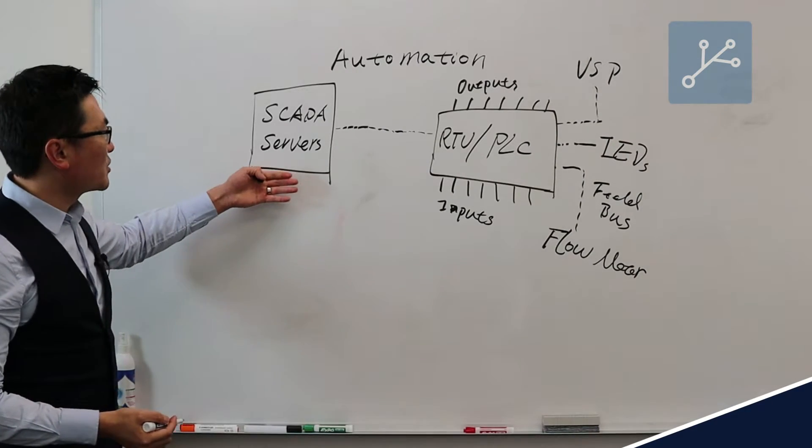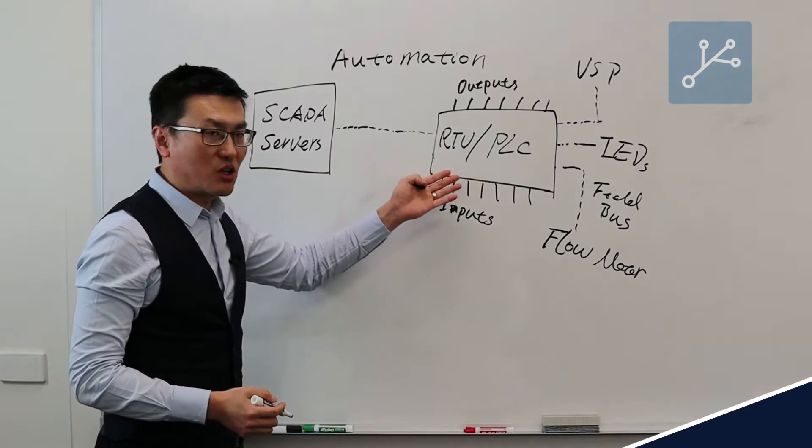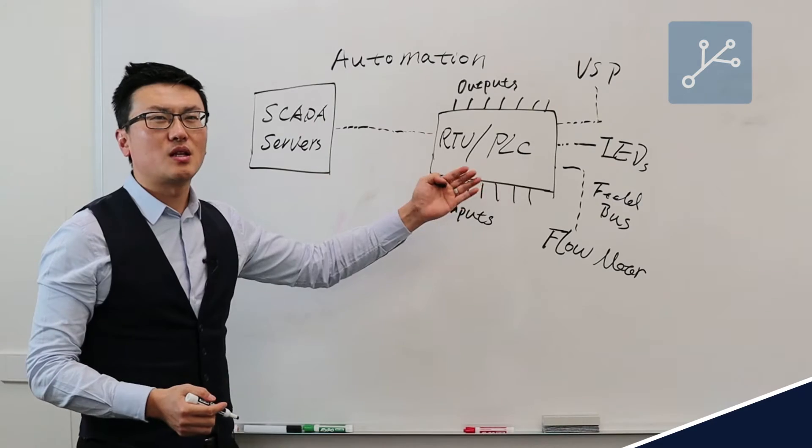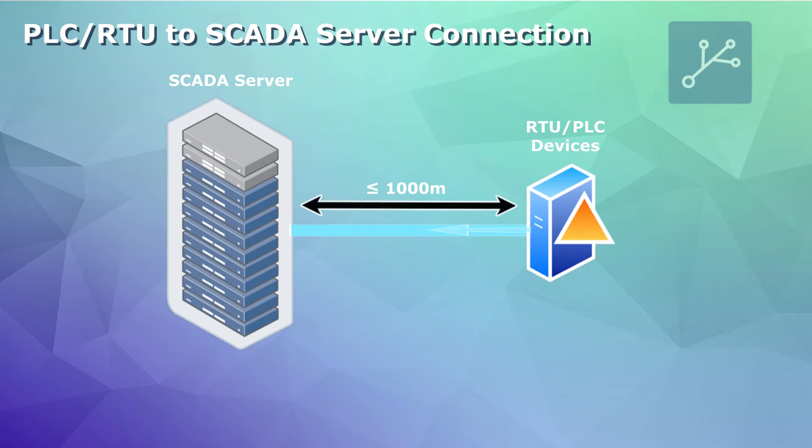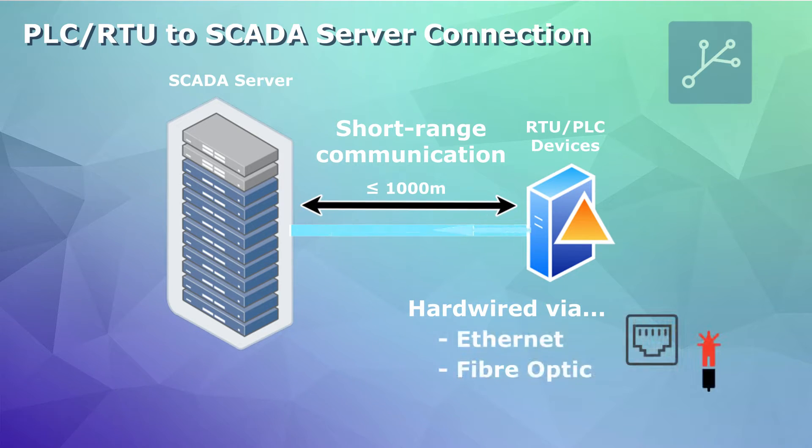In the old days, the SCADA server was located very close to the control system, the PLC or RTU. It can be a few meters away, a couple of hundred meters away, so the linkage between these two components can be done through hardwired cable and Ethernet or fiber optics.